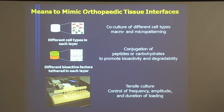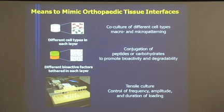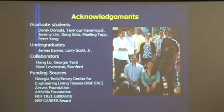Those are a couple of examples of what we're doing in the lab — co-culturing cells to look at how that affects the formation of these interfaces, and tethering different bioactive factors — all in conjunction with the possibility of tensile loading. While we're focusing on the bone-ligament interface at the moment, these types of model systems could be very powerful to look at all kinds of interfaces between tissues throughout the body. I'd like to thank the members of the lab who did the work presented, as well as our collaborators and funding sources. Thank you.